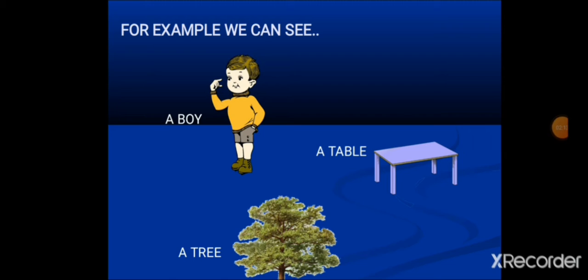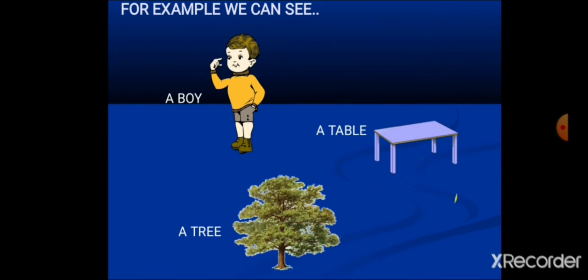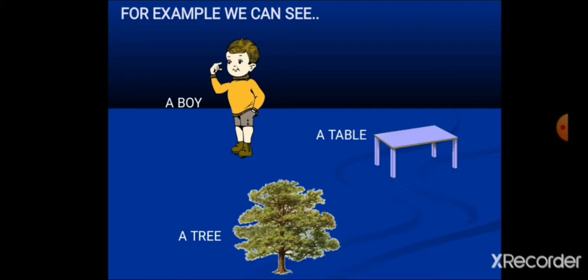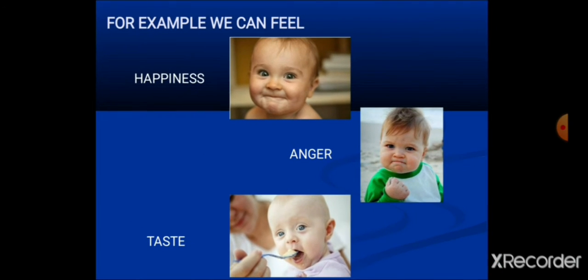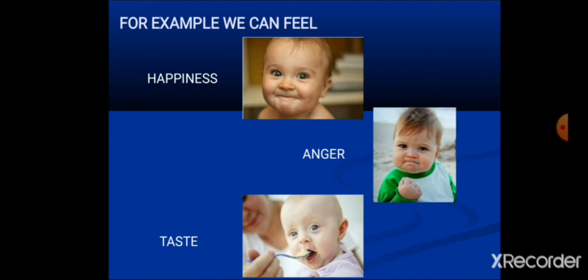For example, things we can see: a boy, a table, a tree — you can see all these three things, so these are examples of nouns we can see. For things we can feel, the examples are happiness, anger, and taste. These three we can only feel, we cannot touch them, so these are nouns we can feel.